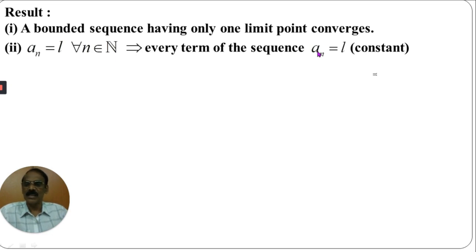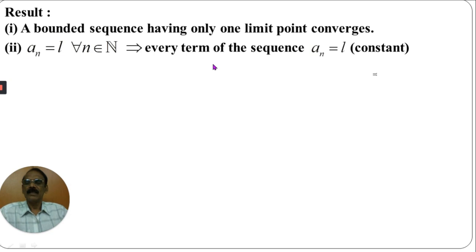This is true only for constant sequences. For example, consider the constant sequence AN whose nth term is AN equals 5. The first term is 5, the second term is 5 — that is, AN equals 5 for all N. So this is true only for constant sequences.